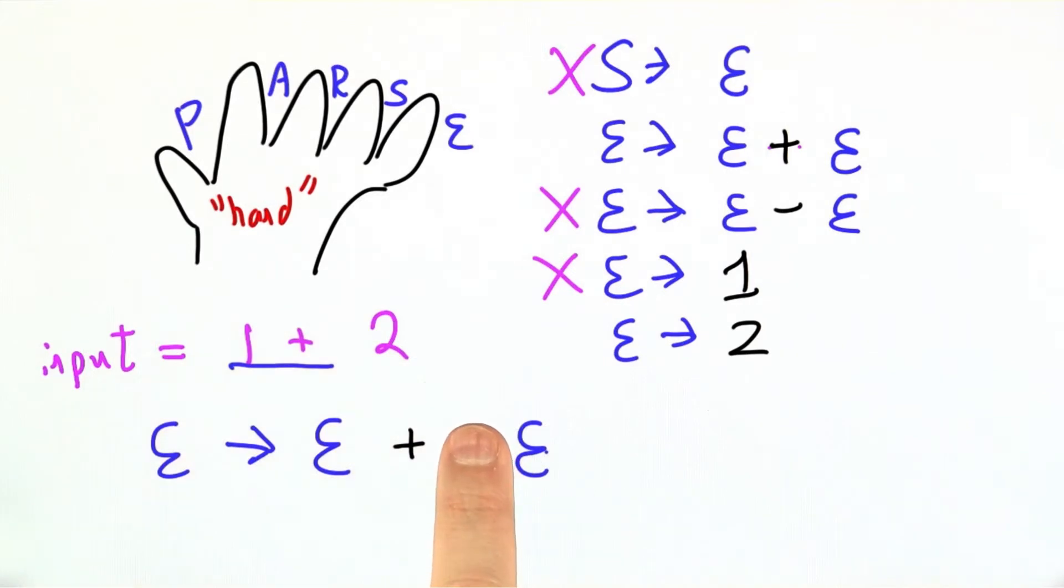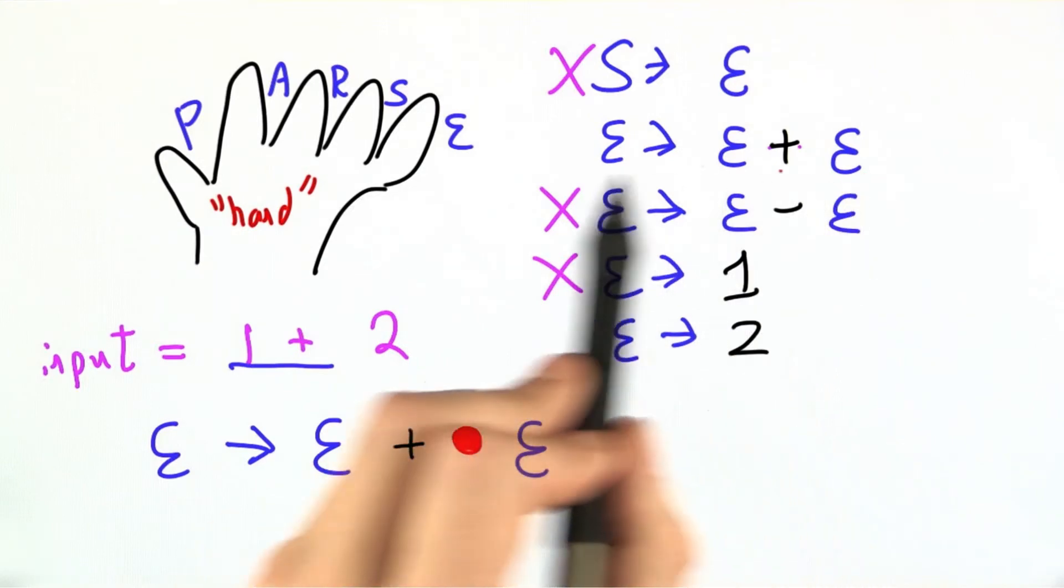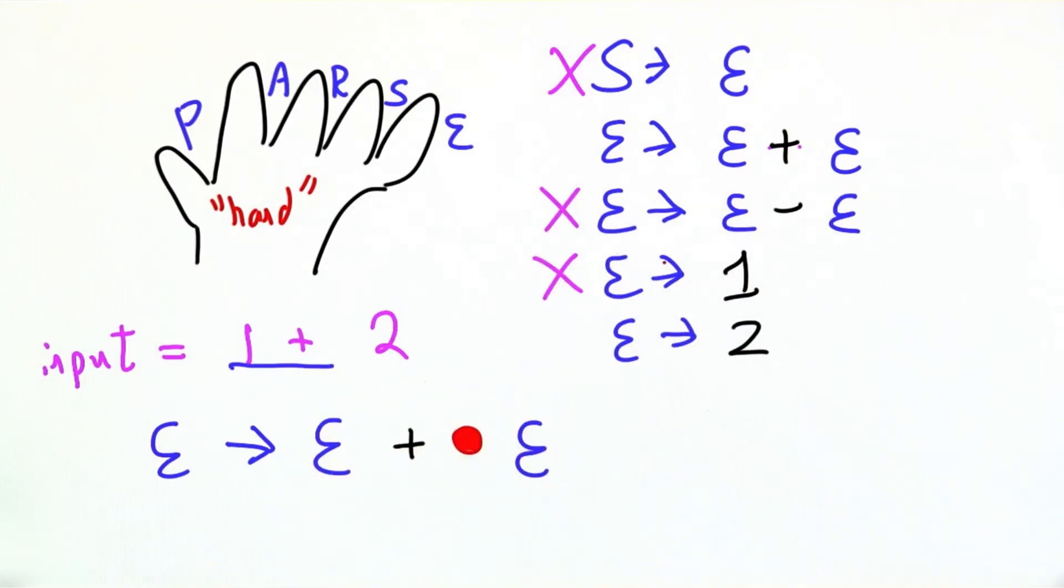In fact, I'm going to claim that we're right here. In the rule, e goes to e plus e, we've already seen the e and the plus. Here's my finger, and we're about to see the next e. Since I can't always leave my finger on the slide, we often formally draw a red dot in the middle of one of these rules to keep track of where we are.